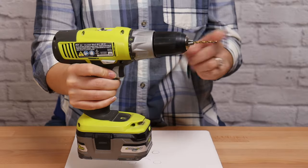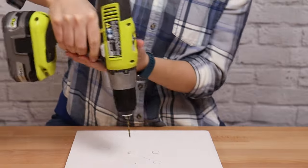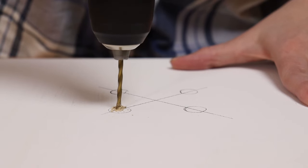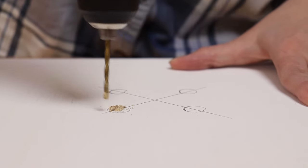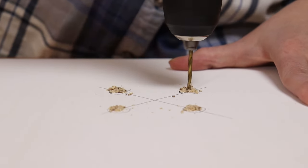I'm pre-drilling all my screw holes using an eighth inch drill bit, which is just narrower than the screws I'm using. Then in the center of each of the circles we drew, I'm going to put a hole that's about halfway down through the plywood. You don't need to go all the way through as the screws won't reach that far.